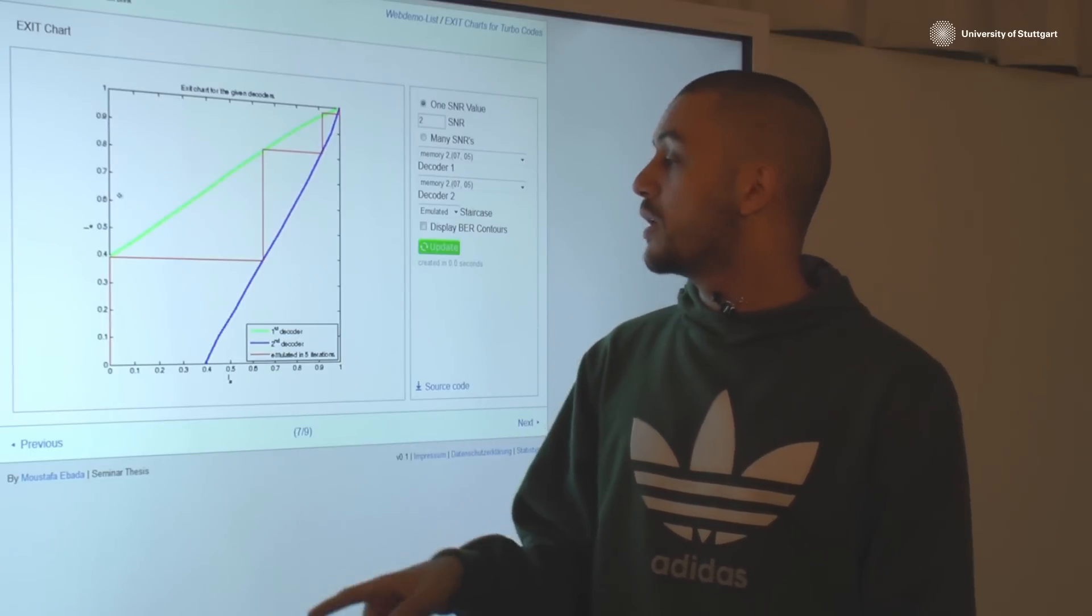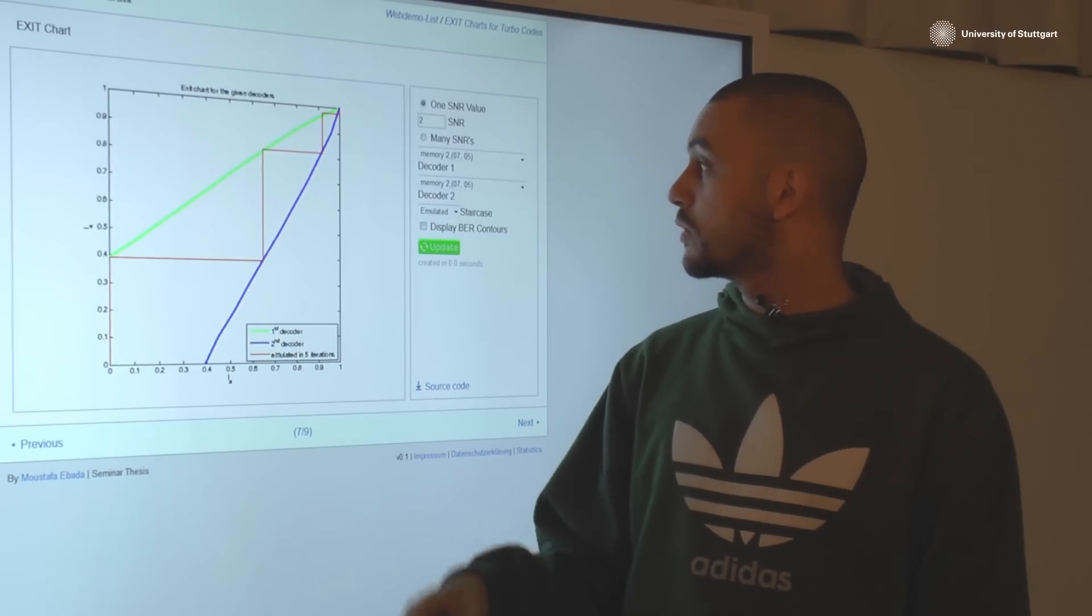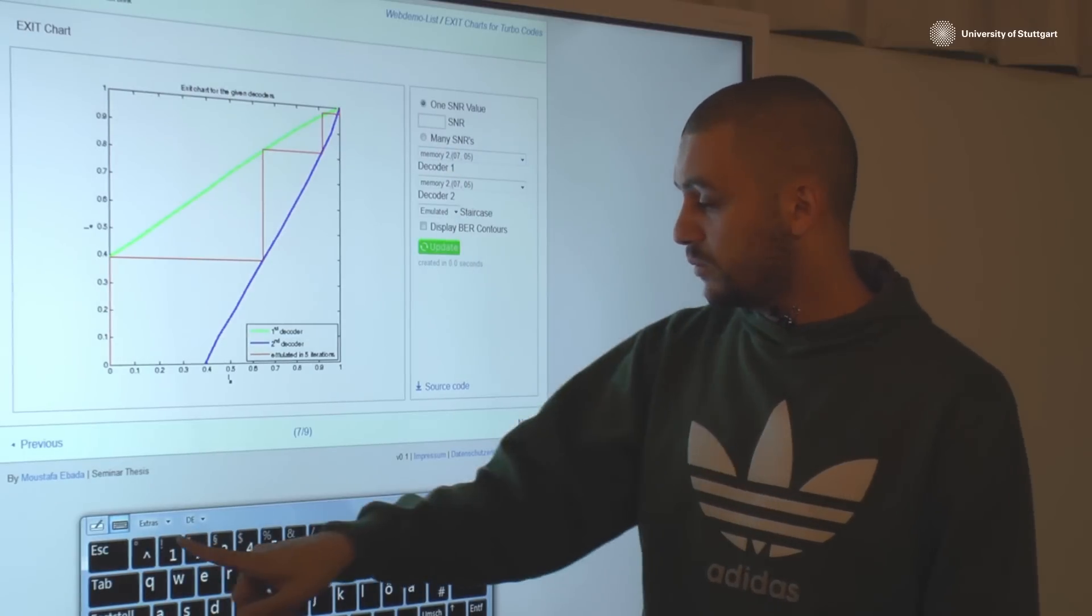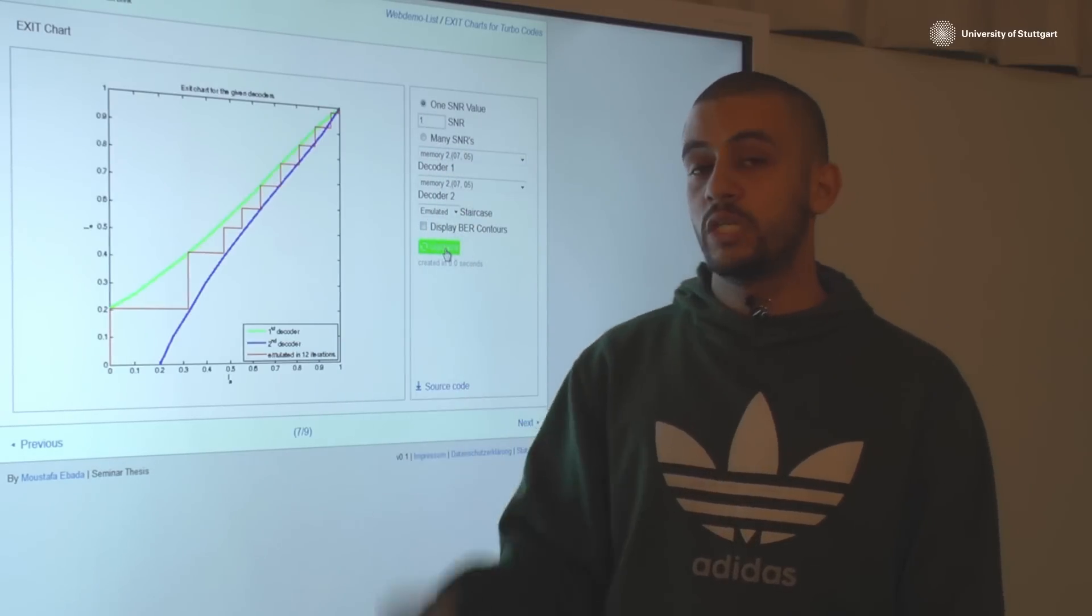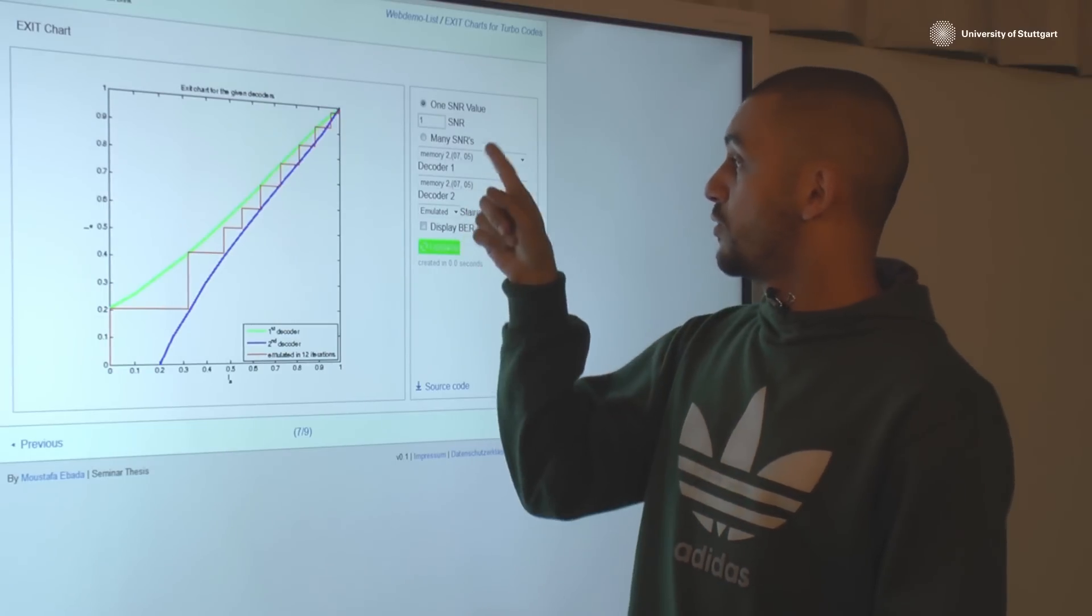Like the exit chart. It allows you to view your exit chart for your required decoder. Let's say choose value of 1 dB SNR and view this. So here is the exit chart conversion behavior for the 1 dB SNR for the memory element 2.